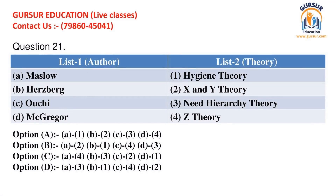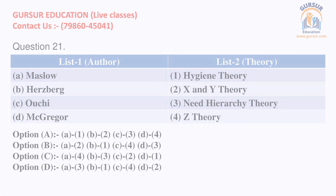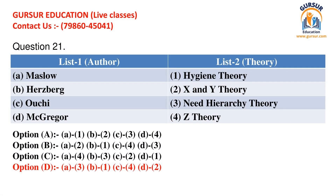Question number 21. Two lists are given. Match list 1 (Authors) with list 2 (Theories). List 1: A. Maslow, B. Hertzberg, C. Alchi, D. McGregor. List 2: 1. Hygiene Theory, 2. X and Y Theory, 3. Need Hierarchy Theory, 4. Z Theory. Below are given the options with different matches. You can pause the video and choose the appropriate answer. The right answer is Option D. We suggest you to pause the video to analyze and learn the correct combination.